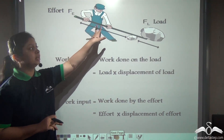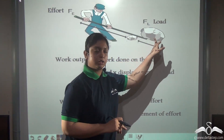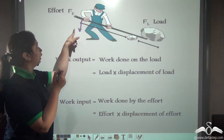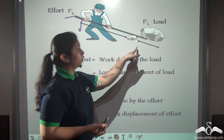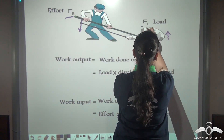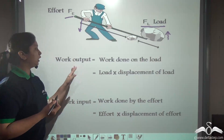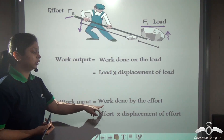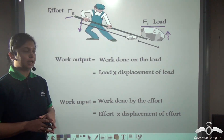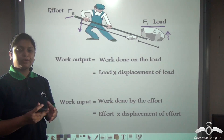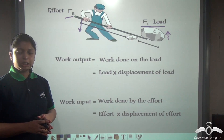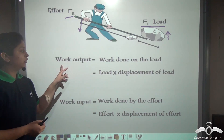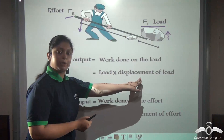Now look at this diagram. Here a man is using a straight bar to move a heavy stone or load. The man applies effort in a downward direction, denoted by Fe, and the load — the stone — is moved upward, denoted by Fl. Work output is the work done on the load by the machine, and work input is the work done by the effort. Since work equals force into displacement, work output equals load multiplied by the displacement of the load.